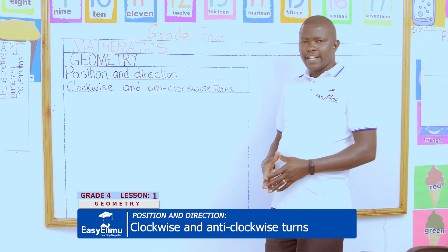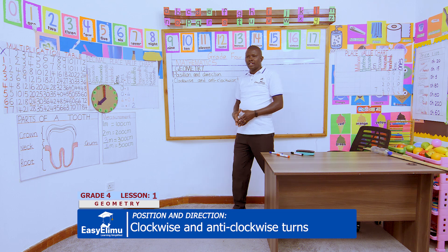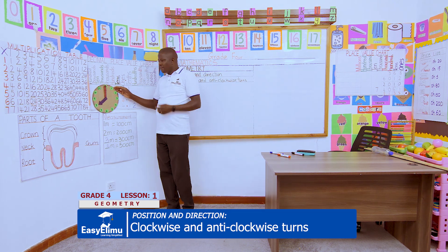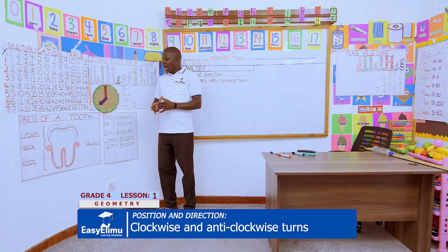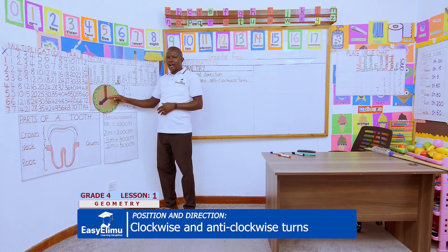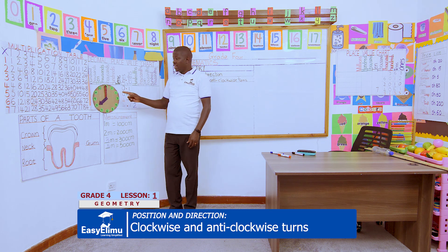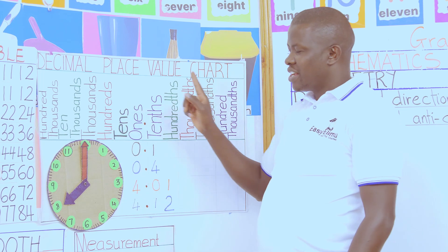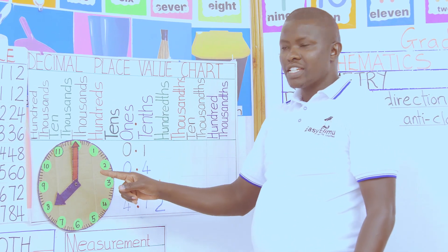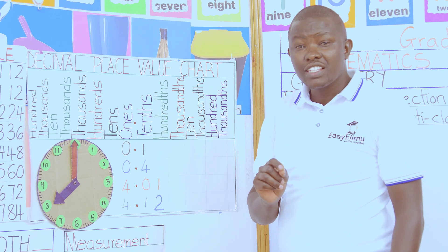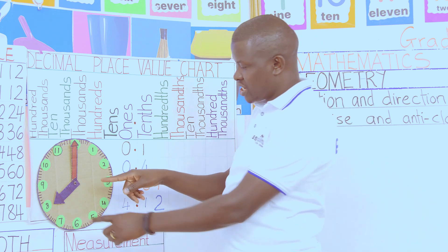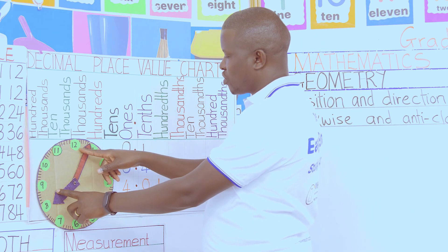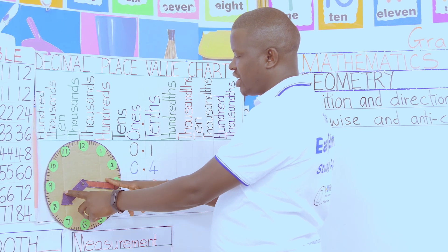In our pairs, we have a clock face here. A clock face has a long minute hand and a shorter hour hand. In our groups, try to rotate the minute hand towards the right. It is the longer one — move it towards the right. It is moving towards the right.